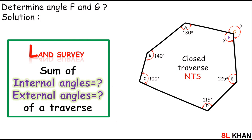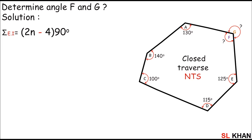In the previous lecture we learned that the sum of internal angles equals (2n − 4) × 90 degrees. Notice in the given diagram, A, B, C, D, E, and F are the internal angles of the traverse.